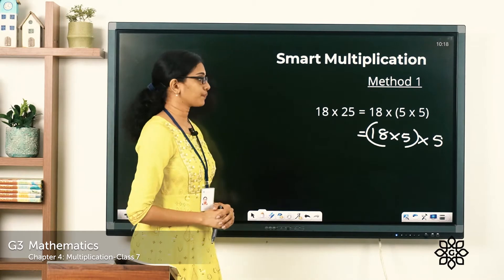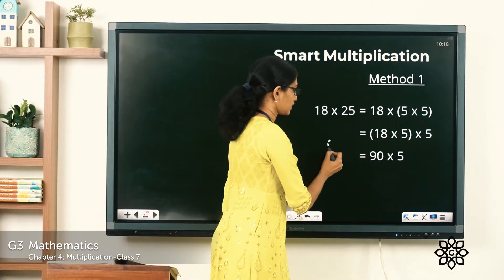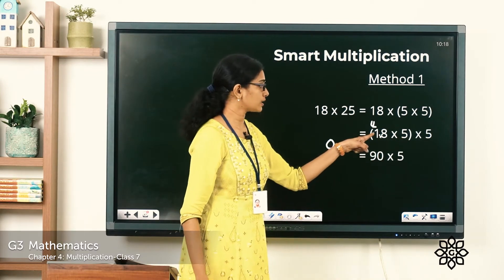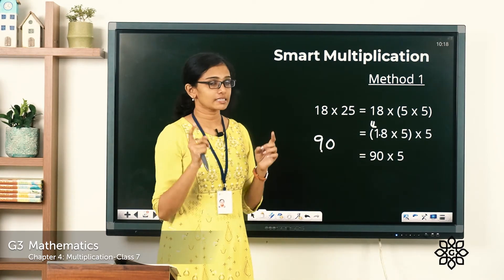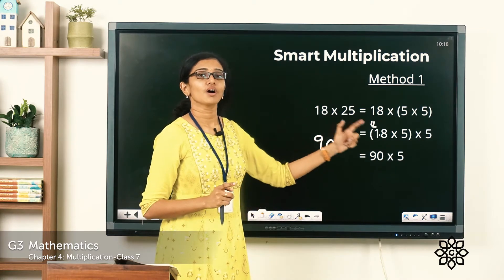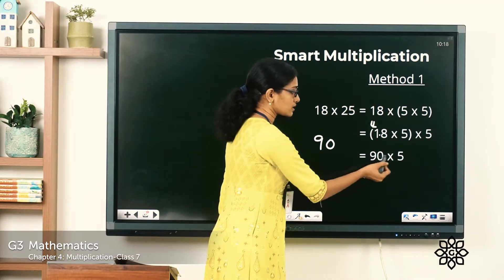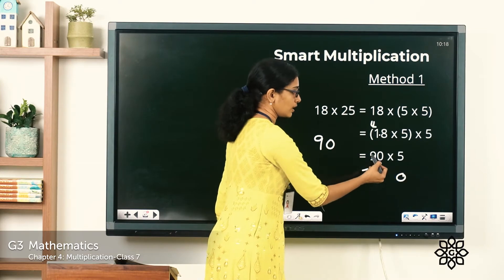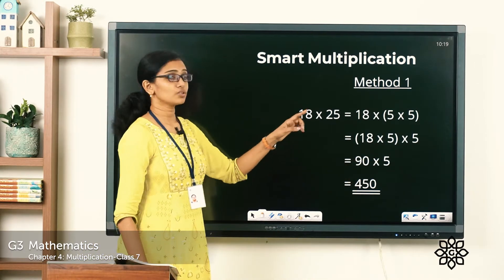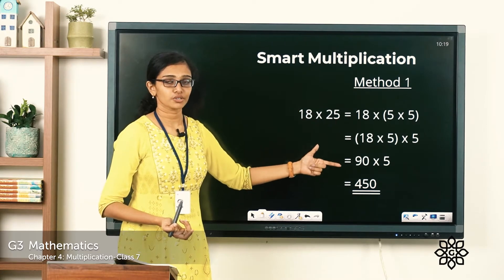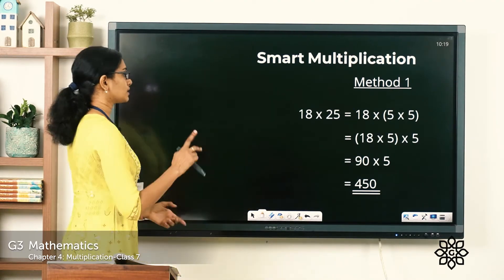Now let's do 18 into 5. 8 fives are 40, and we have a carryover in the tens place. 5 ones are 5, 5 plus 4 is equal to 9. I suggest you do many calculations in your mind — it will make your mind sharper and you will be quick with your calculations. So 18 into 5 is 90, and we have one more number to multiply. So 90 into 5: 5 into 0 is 0, and 5 nines are 45. So 90 into 5 is equal to 450. You didn't have to find a first product and second product and do addition of the products — you just split the multiplication in a different way. So 18 into 25 is equal to 450. That was one method.